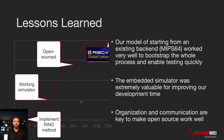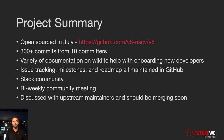The third big step is open sourcing and building a community. We open sourced in July. As of this recording, we've got about 300-plus commits from 10 committers. We've got a variety of documentation up on our GitHub page in the wiki to help with onboarding new developers. We've got issue tracking, milestones, and roadmaps. We've got a Slack community and a bi-weekly community meeting. We are discussing upstreaming with V8 — we've been in touch with them and we should be merging soon. Possibly by the time you watch this, it will already be merged upstream.